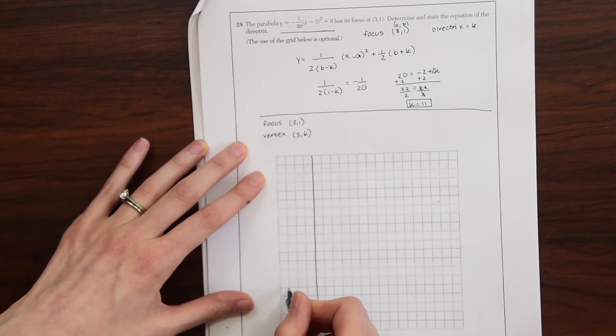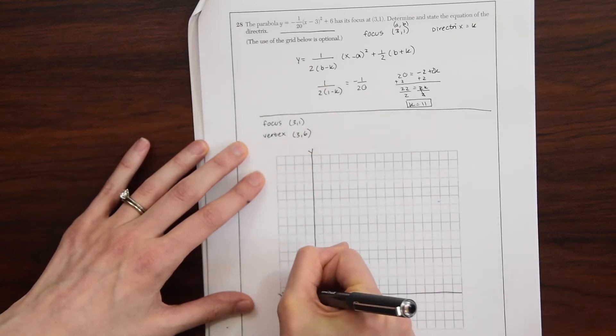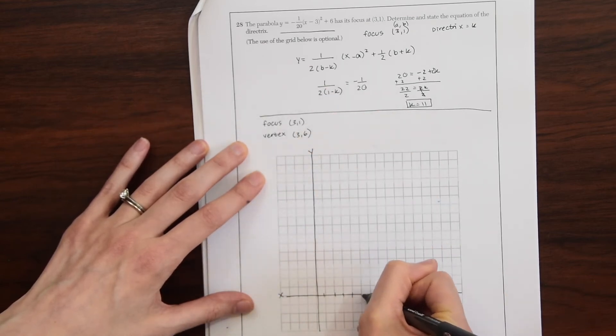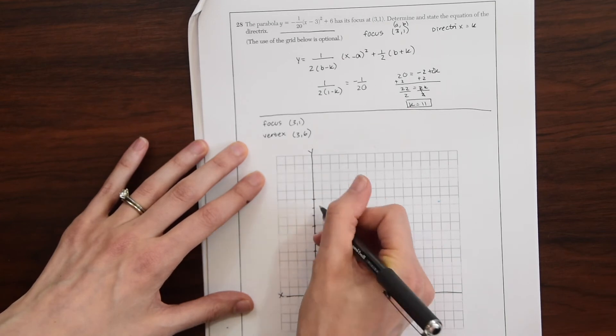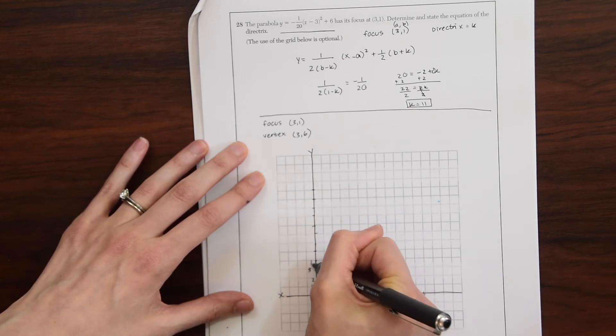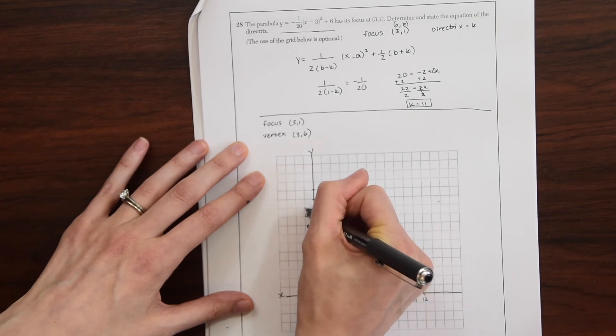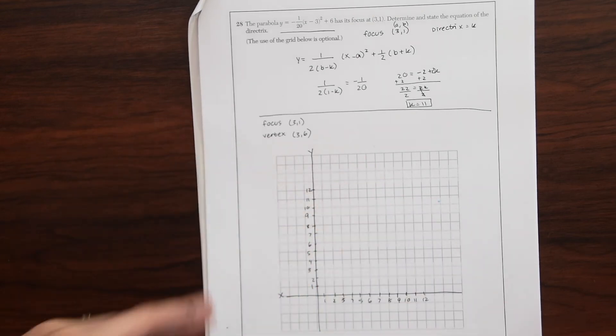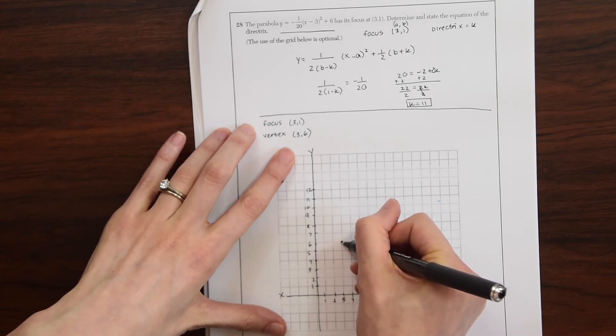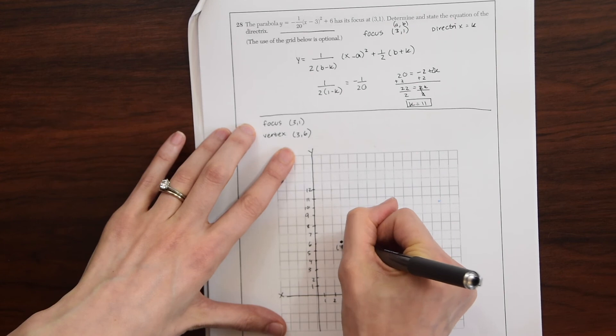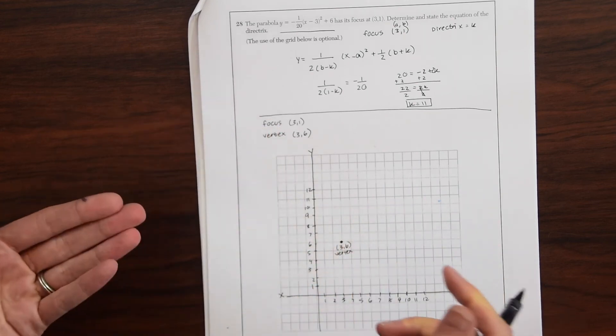So we're going to just draw a little axes. This is our y, this is our x. Okay, so the first thing we want to draw is the vertex, 3, 6. So let's just label this 3, 6. And we know this is the vertex. We know this value is on our parabola.